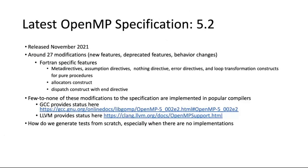Since our last talk, OpenMP specification 5.2 is out as of November 2021. Though it is not heavy with new features, it introduces a lot of Fortran-specific features which in some form already exist for C and C++, such as meta directives, assumption directives, nothing directive, error directive, and loop transformation constructs for pure procedures. We also have allocators and dispatch constructs, and there are behavior changes that have been introduced.